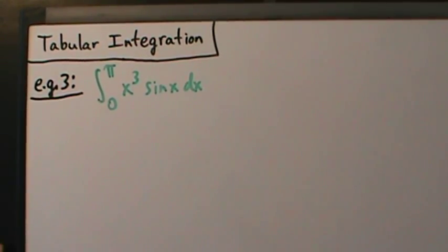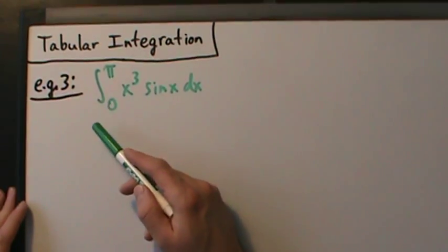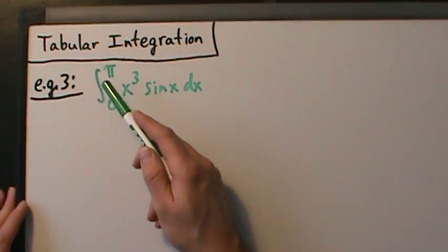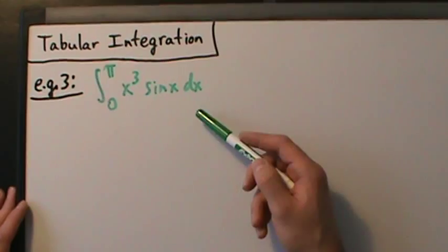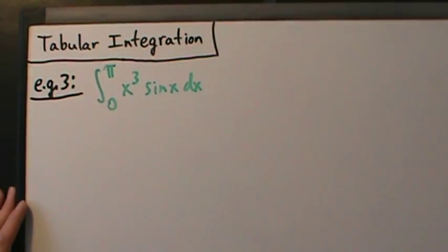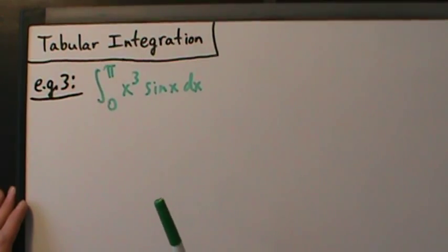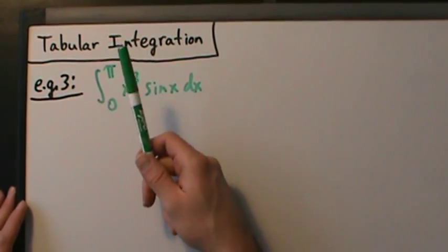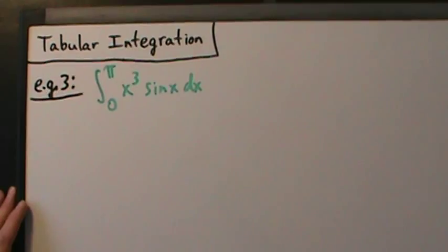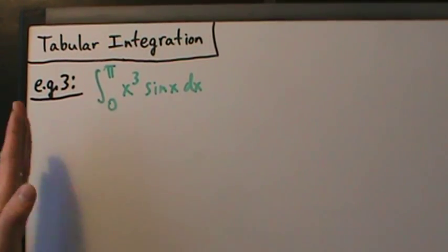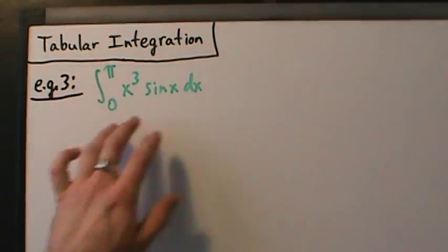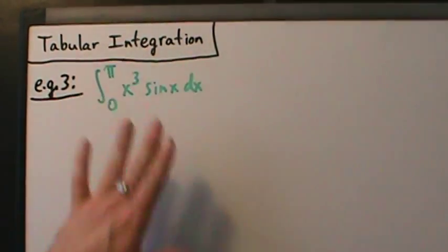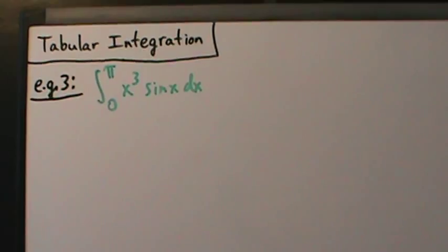Here's Example 3 with tabular integration. Notice this one's a definite integral — the integral from 0 to π of x³ times sine of x dx. When we did Example 1 a couple videos ago, we talked in more detail about what tabular integration is, why it works, and how to set it up. We'll skip a lot of those details here, but we'll cover the details relevant for this problem. So we're doing tabular integration, and the first thing we do is set up that table.